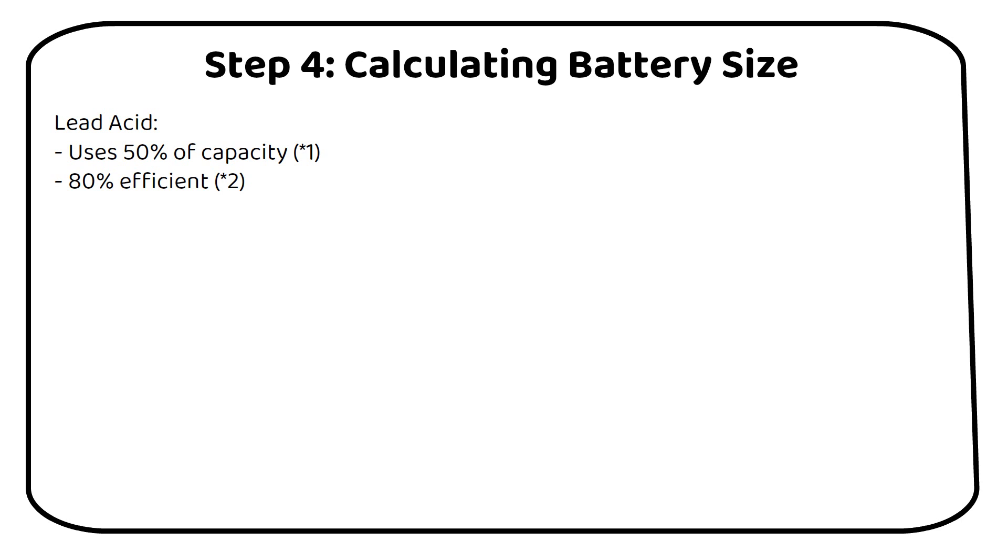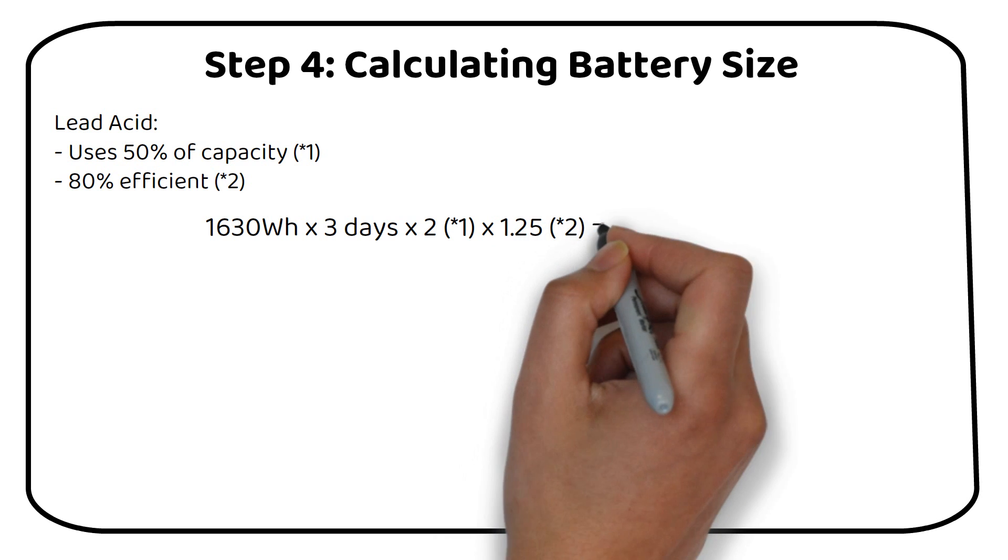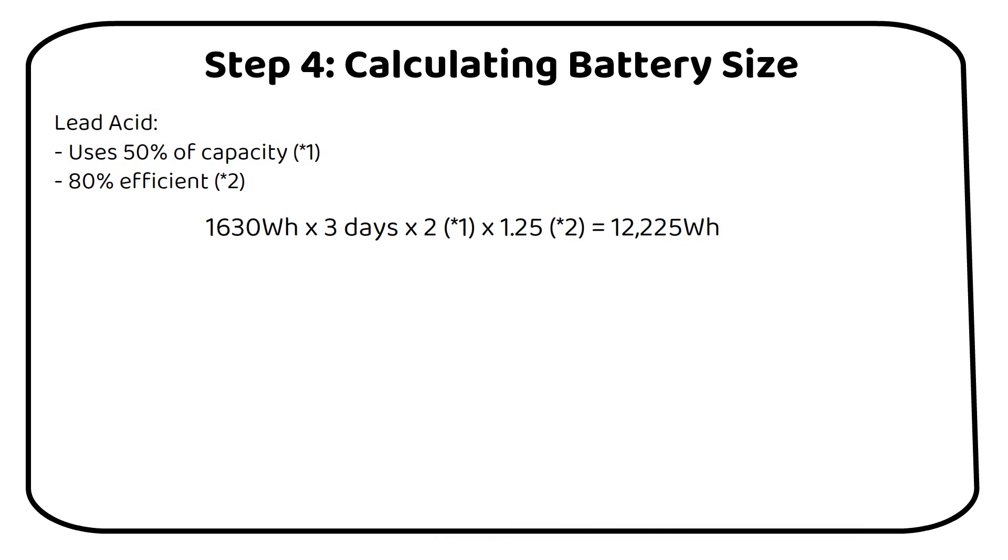Referring back to our load analysis from step 1, where we calculated a total daily usage of 1630Wh, the calculation for 3 days of autonomy would be 1630Wh, which is the daily usage, times 3, which is the days of autonomy, times 2, which is 50% usable capacity of the battery, times 1.25, which equals 80% efficiency, equals 12,225Wh. To determine the required battery capacity in amp hours, divide this number by the battery voltage. 12,225Wh divided by 12V equals 1018Ah.